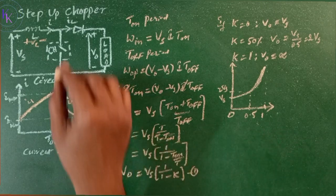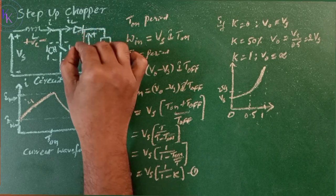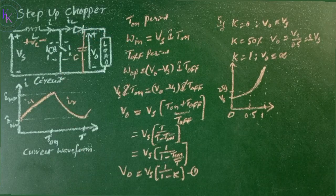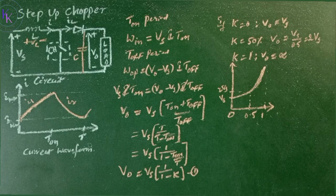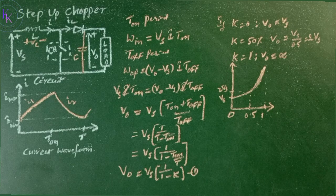If a large capacitor C is connected across the load, the output voltage will be continuous, and V0 would become the average voltage Vs.